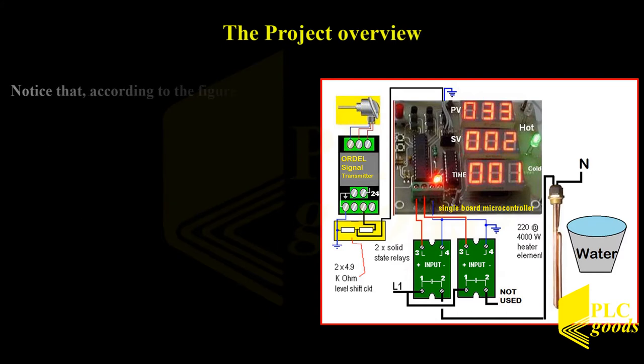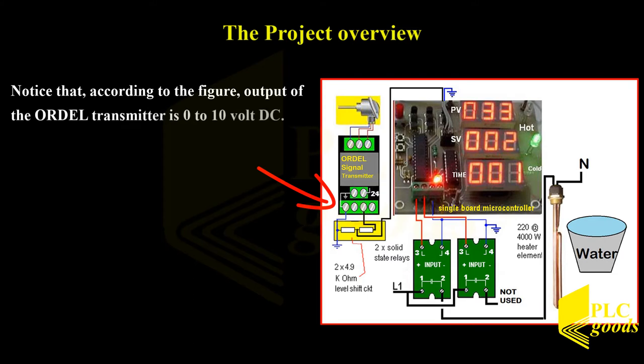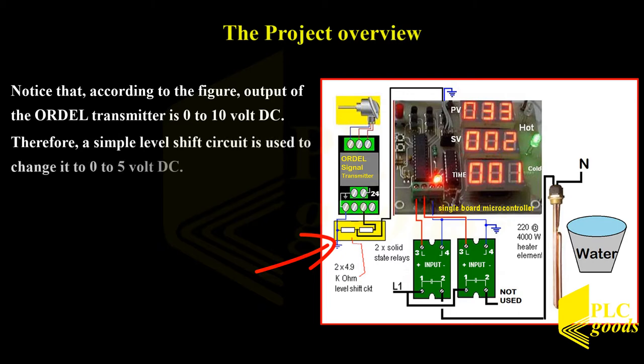Notice that according to the figure, output of the ORDEL transmitter is 0 to 10 volt DC. Therefore, a simple level shift circuit is used to change it to 0 to 5 volt DC.